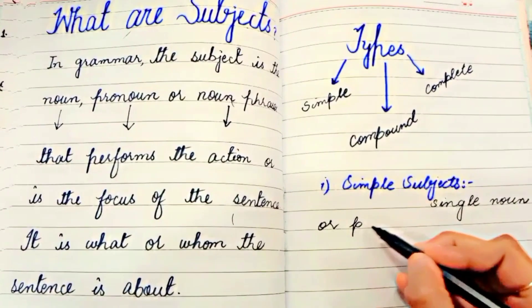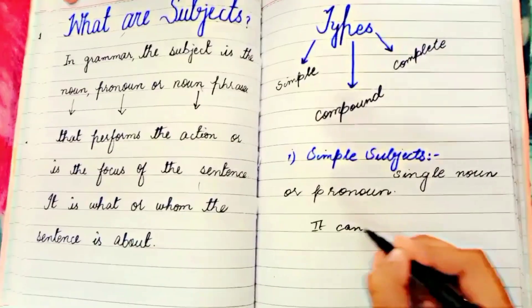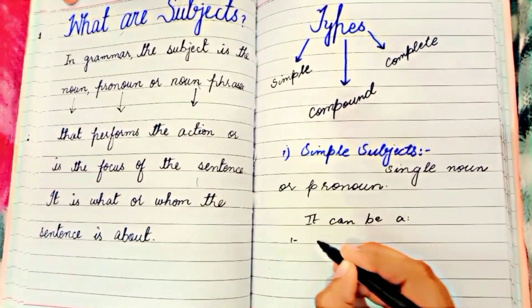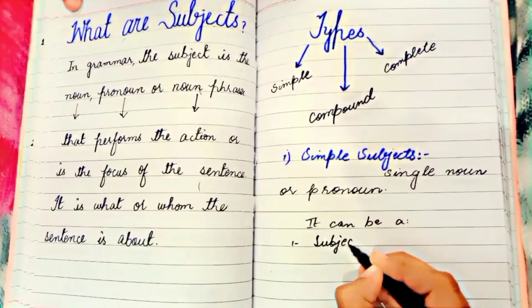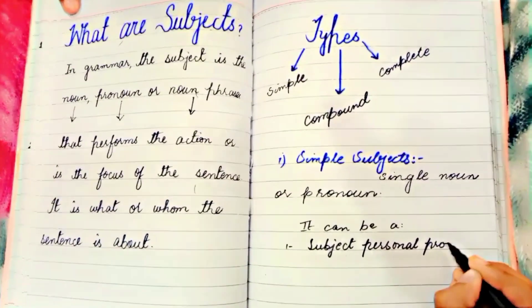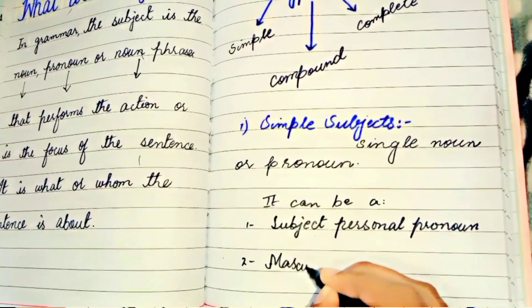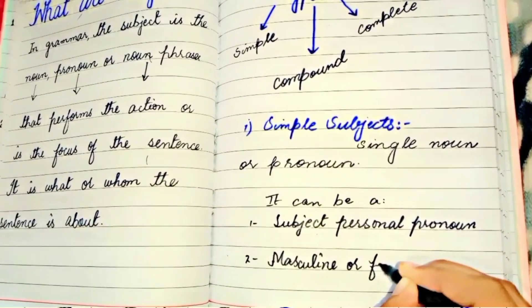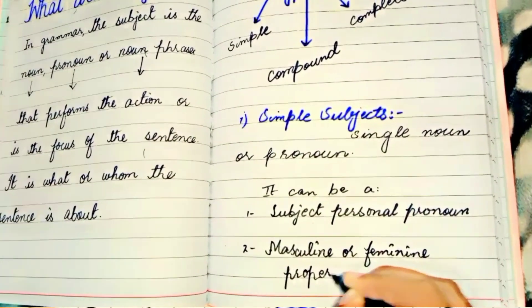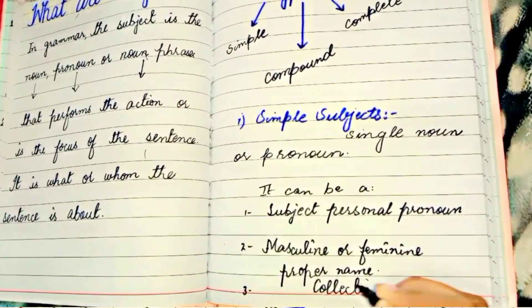What are single nouns and pronouns? Number one: subject personal pronouns. What are personal pronouns? Comment please — comment on how you can identify personal pronouns. Number two: we have masculine and feminine proper nouns — proper names of a specific person, place, or thing.